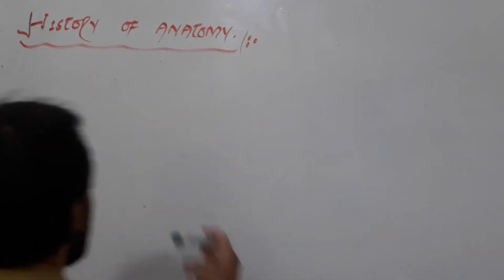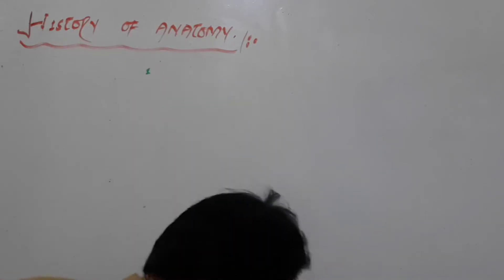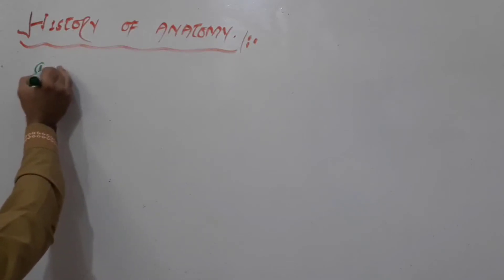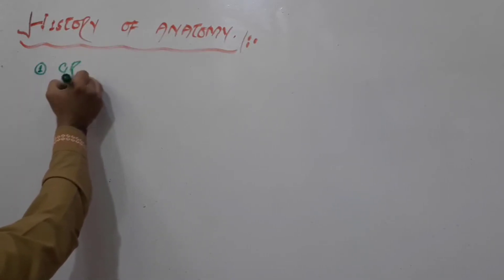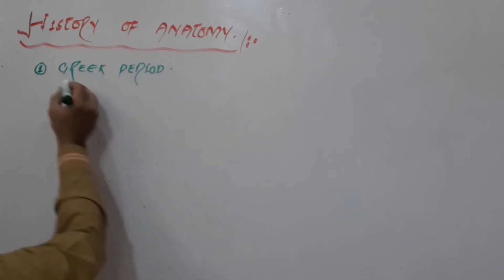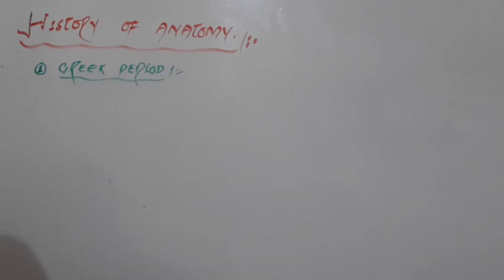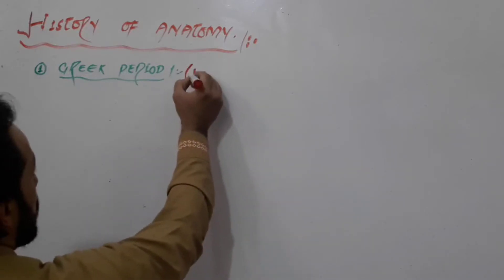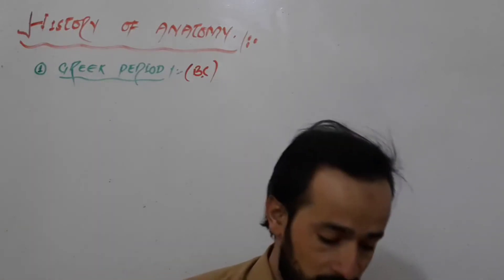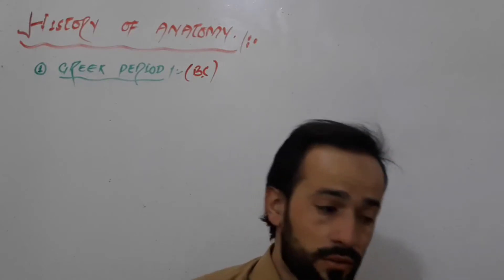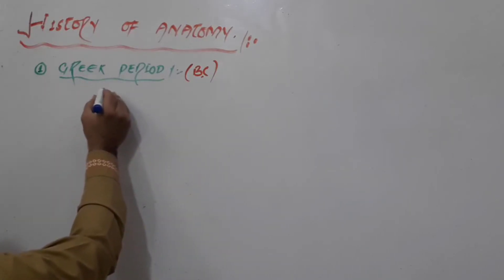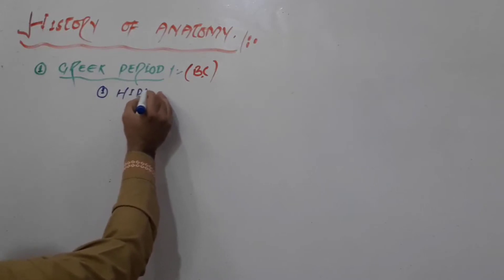So let me write here: who were involved in bringing the knowledge of anatomy? The first period of anatomy is the Greek period, and this period is from BC. From the BC period, we start with who were the scientists and doctors who played a role in flourishing the knowledge of anatomy. The first scientist we have is our friend Hippocrates.